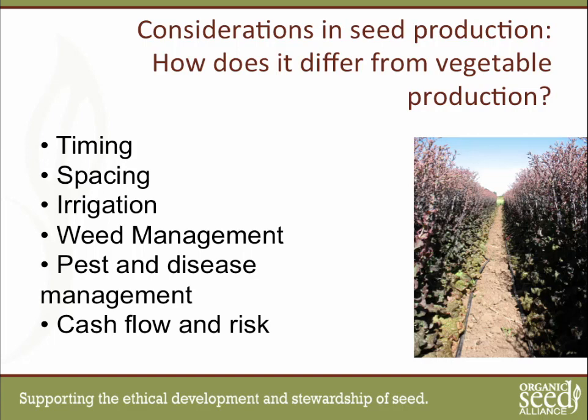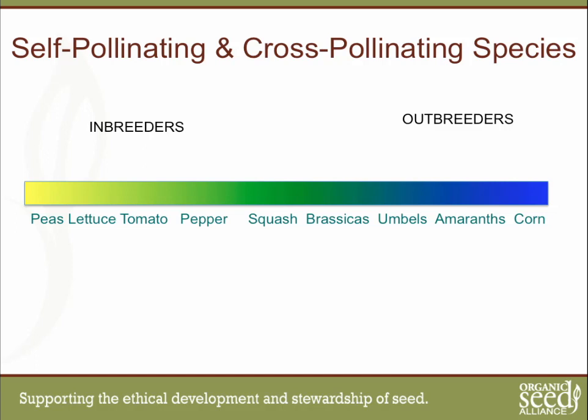Those are some of the things to consider when deciding whether to grow seed and what kind of seed crops to grow. Beyond the big-picture considerations, there are two other pieces of information to think about when choosing which seed crops make sense to start with: isolation distance and population size. Both relate to whether your crop is more cross-pollinating or more self-pollinating.